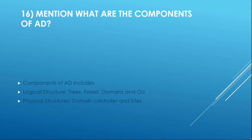Question 16: What are the components of AD? Components of Active Directory include Logical Structures — Trees, Forest, Domains, and OUs — and Physical Structures — Domain Controllers and Sites.